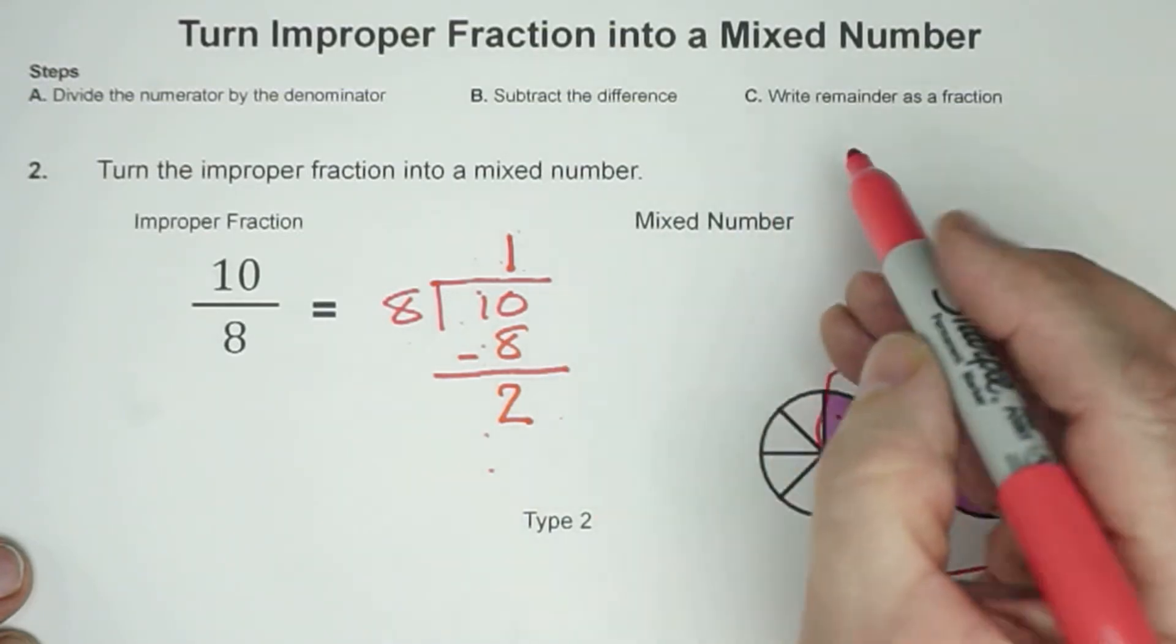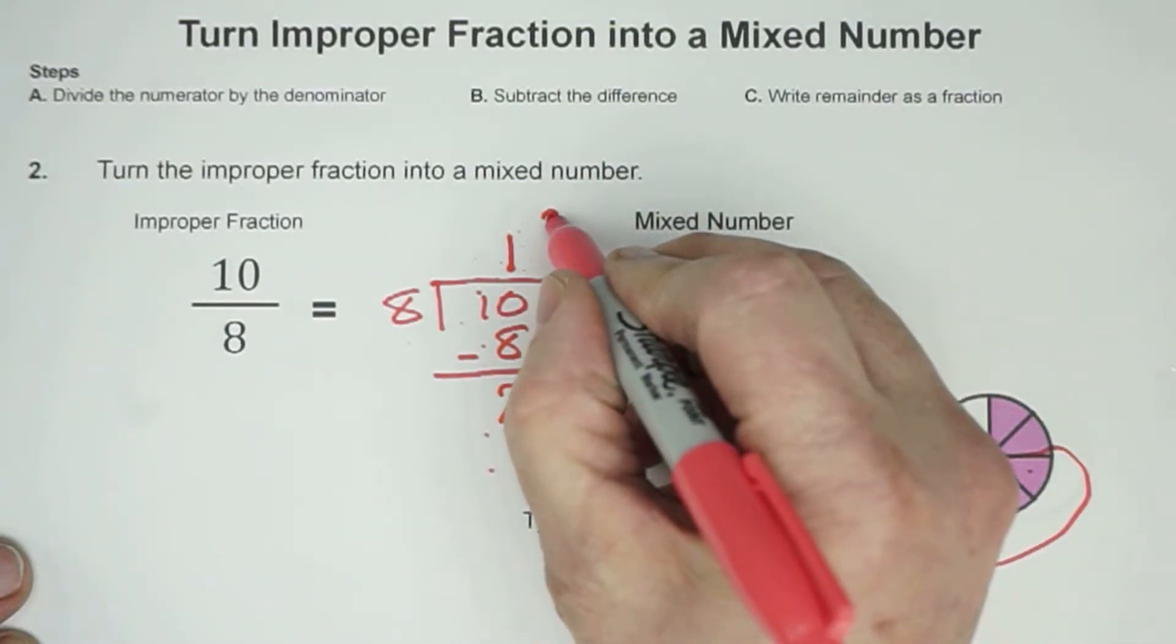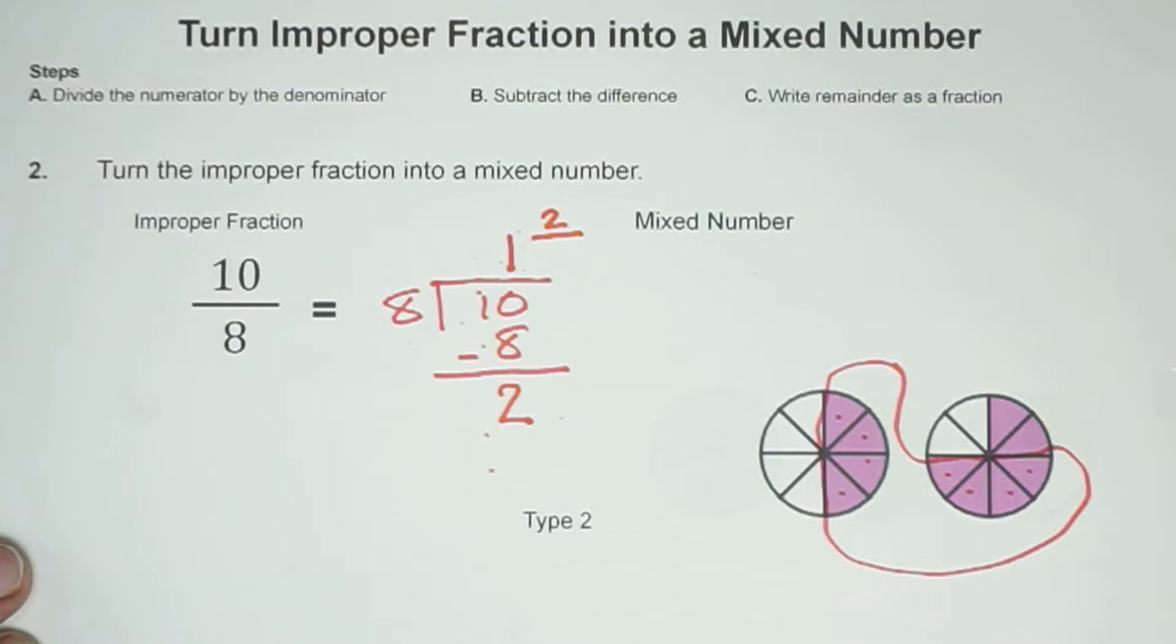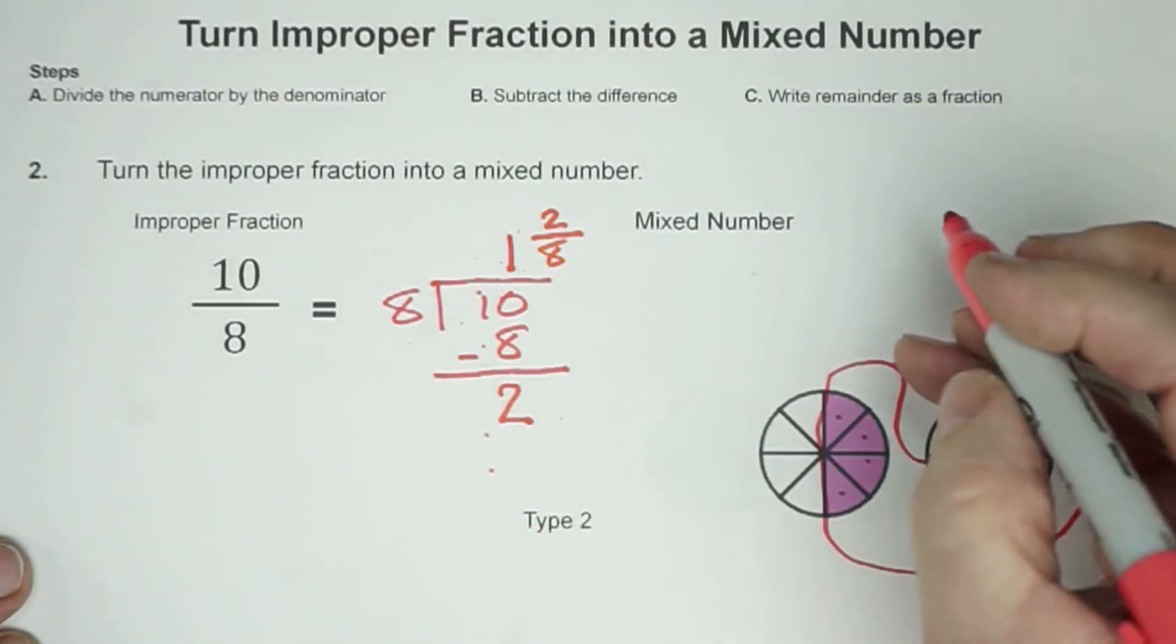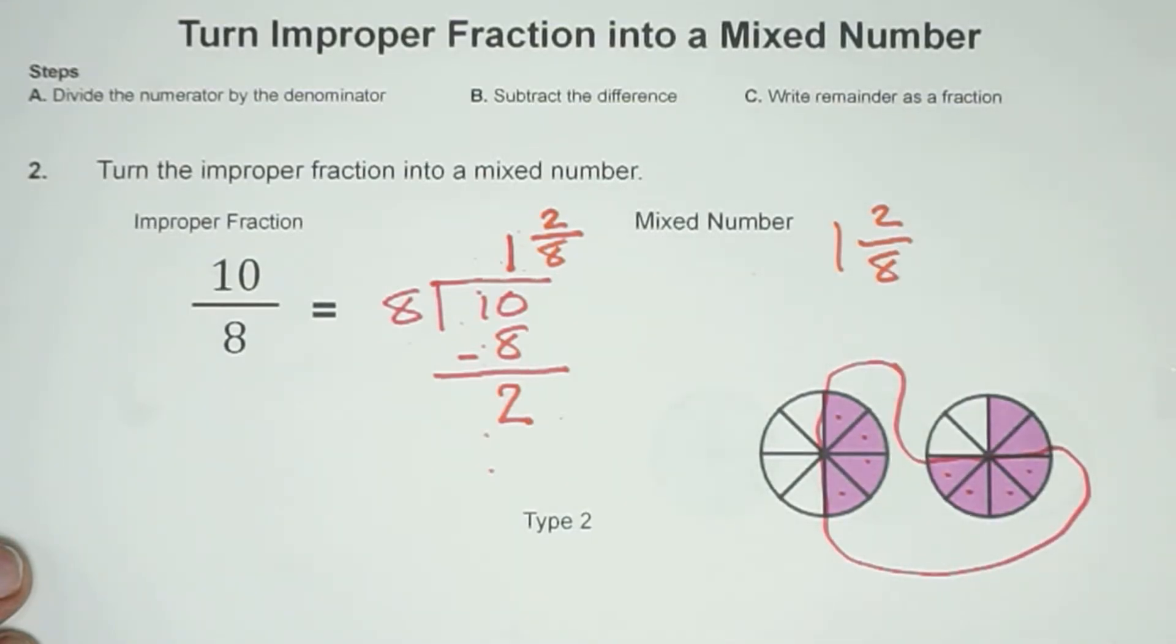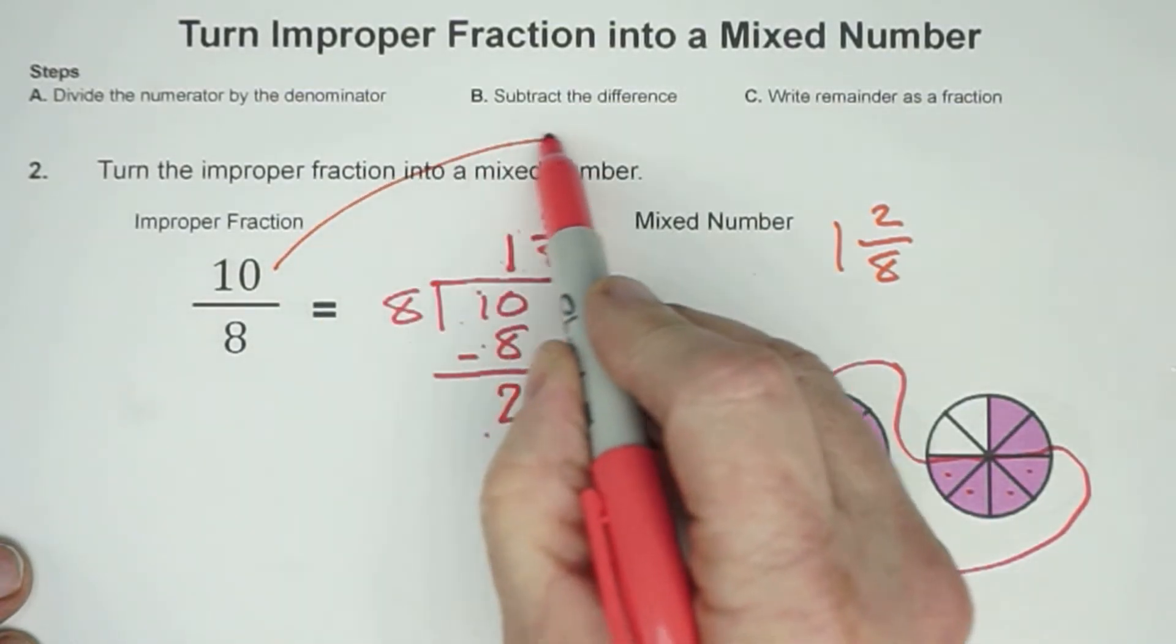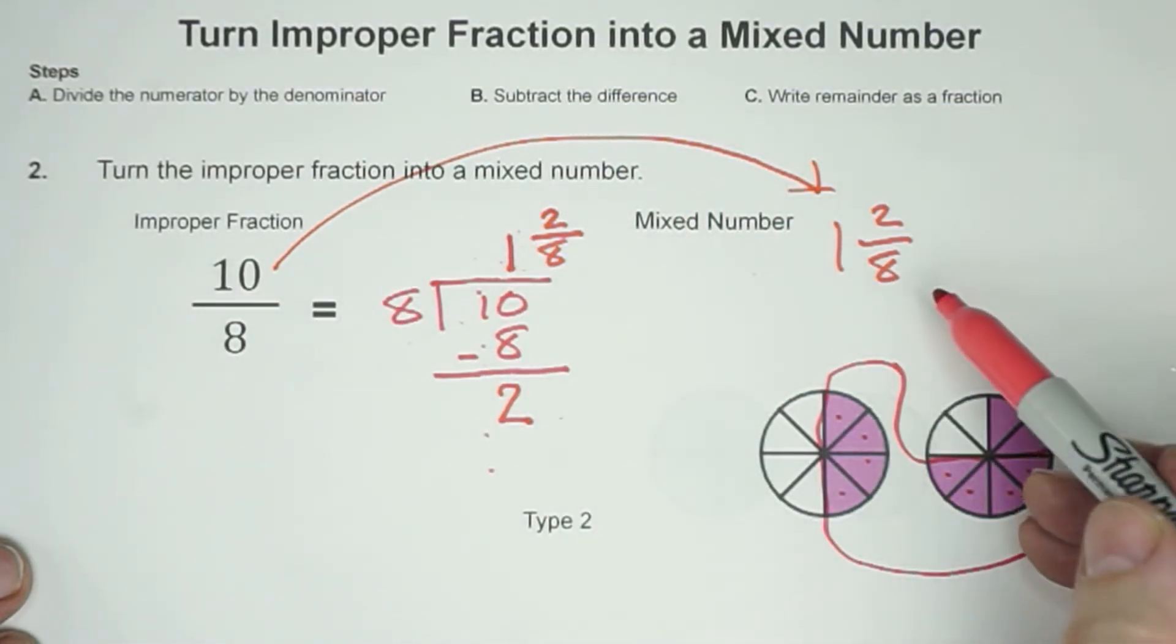And then the remainder, which is 2, we're going to write as a fraction. So that's our numerator. Draw your fraction bar. And then we're just going to take that 8. So our answer, our mixed number is 1 and 2/8. So in other words, we rewrote 10/8, which is our improper fraction as a mixed number of 1 and 2/8.